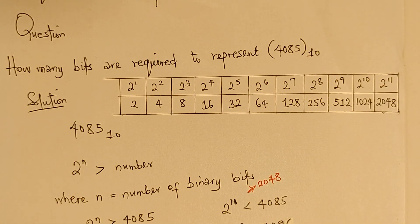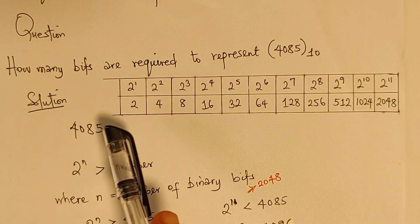Now, N represents the number of binary bits. So, all we need to find out is what is that part of N in binary number that will give us something equivalent to 4085 or greater than 4085. So, let's do a quick recall using the table.